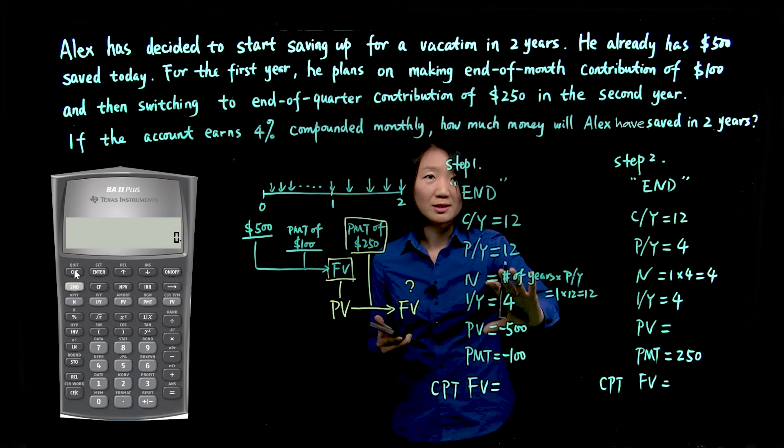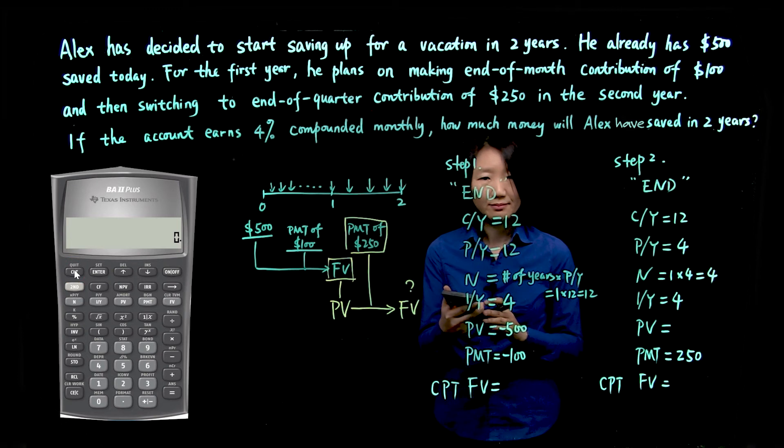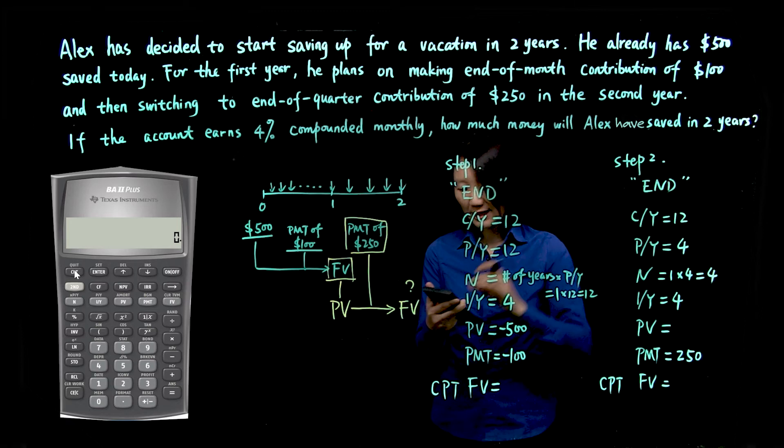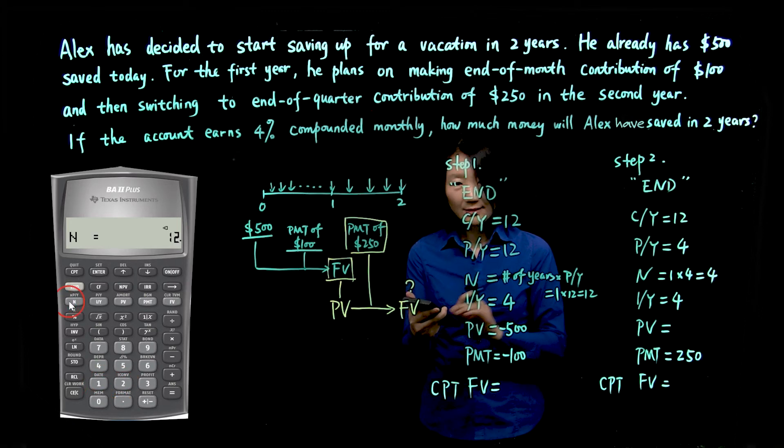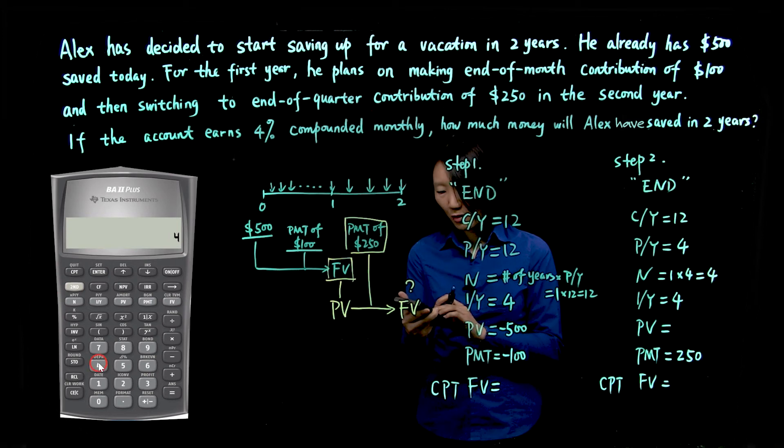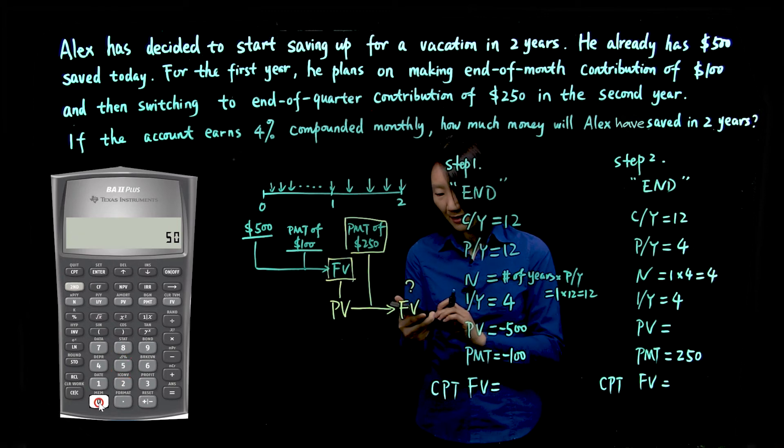Now, for these five values, we need to enter four of them, and then we can compute the last one. So 12 is for N, and interest rate, IY is 4, so 4, IY. PV is 500, so 500. Let's make it negative, PV.